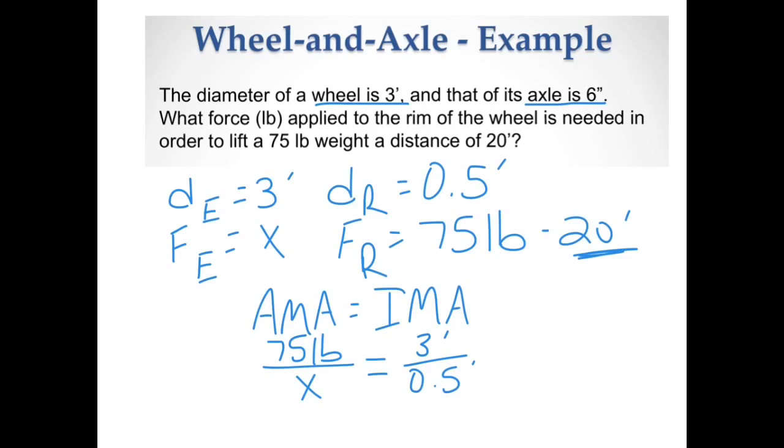My IMA turns into a ratio. Three feet divided by 0.5 feet is going to give me six. So that means that there is a ratio of six to one.